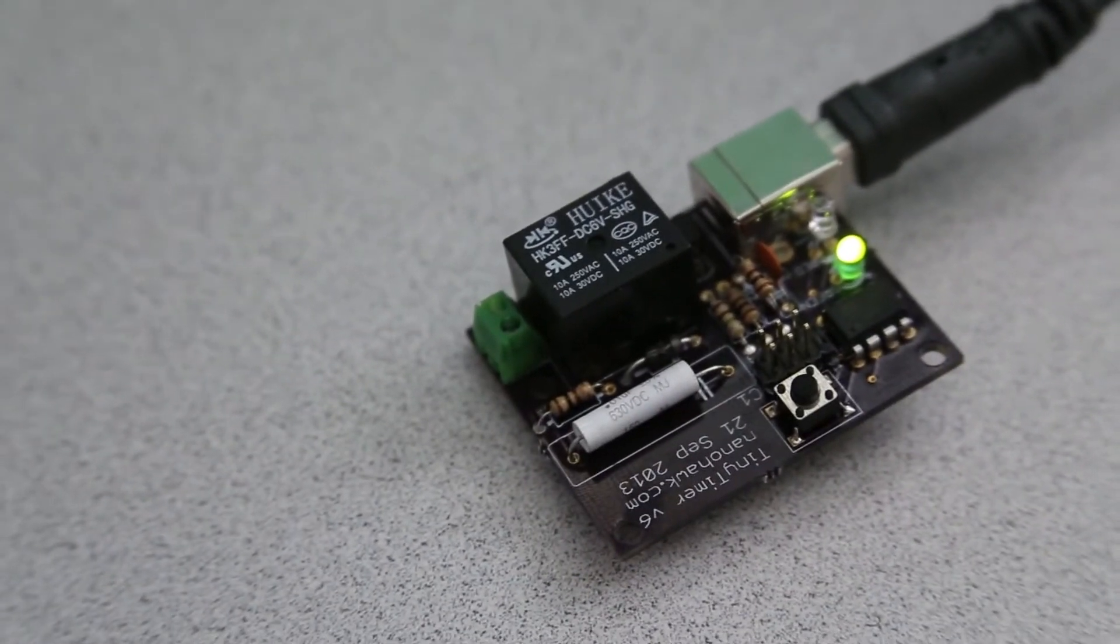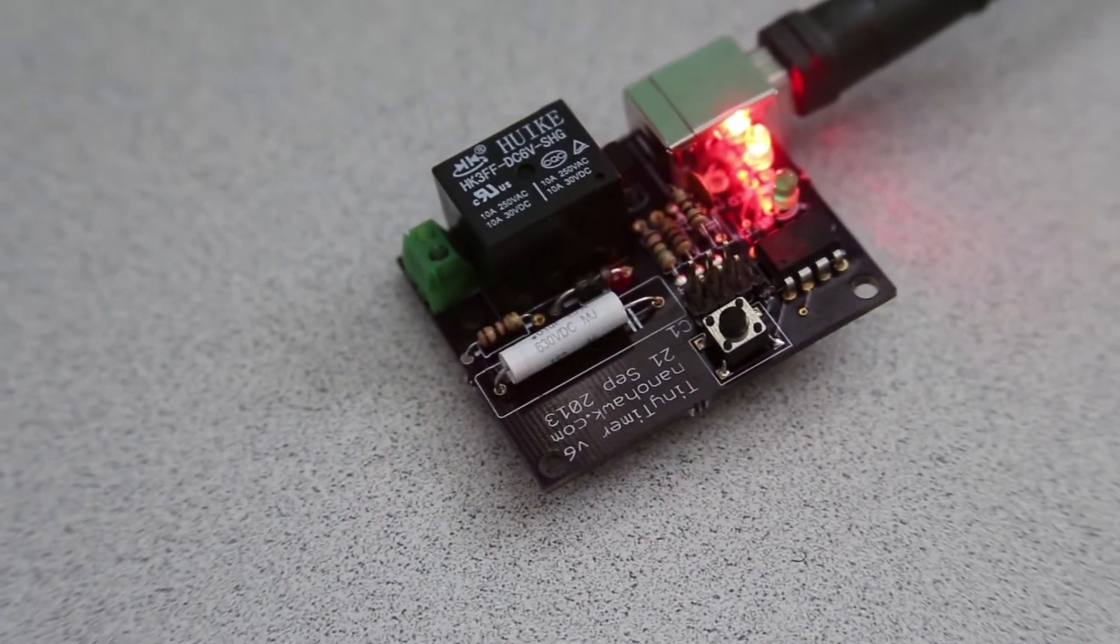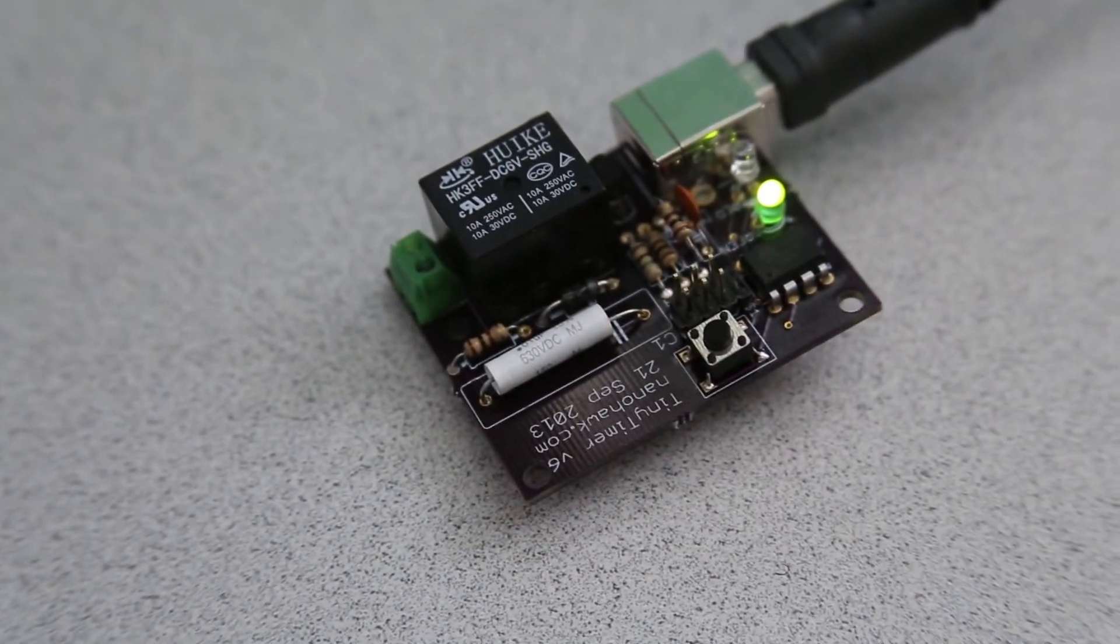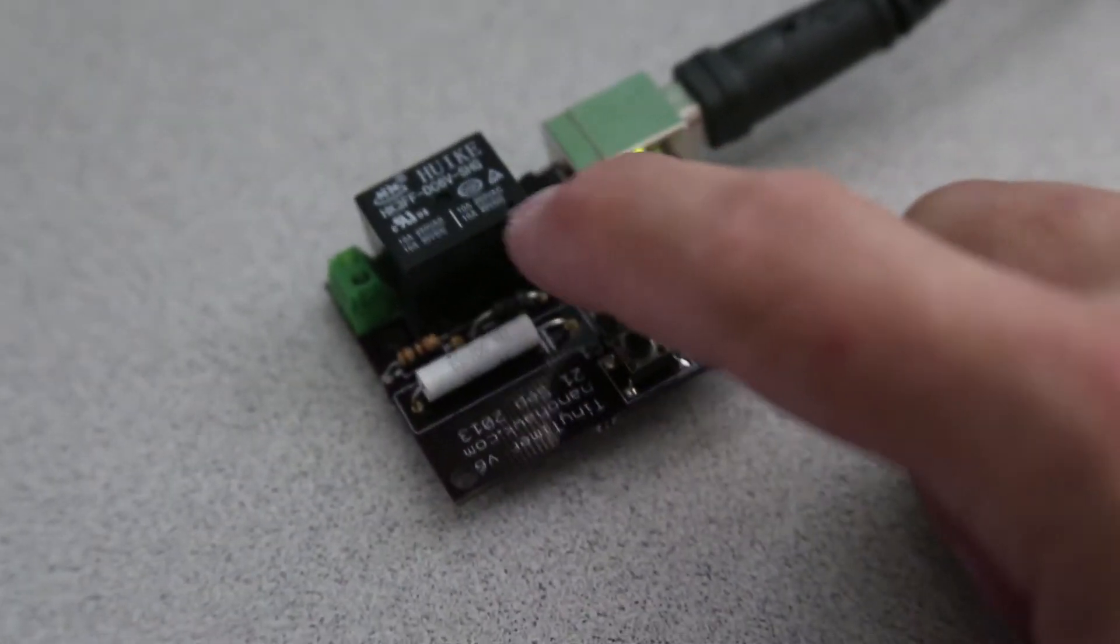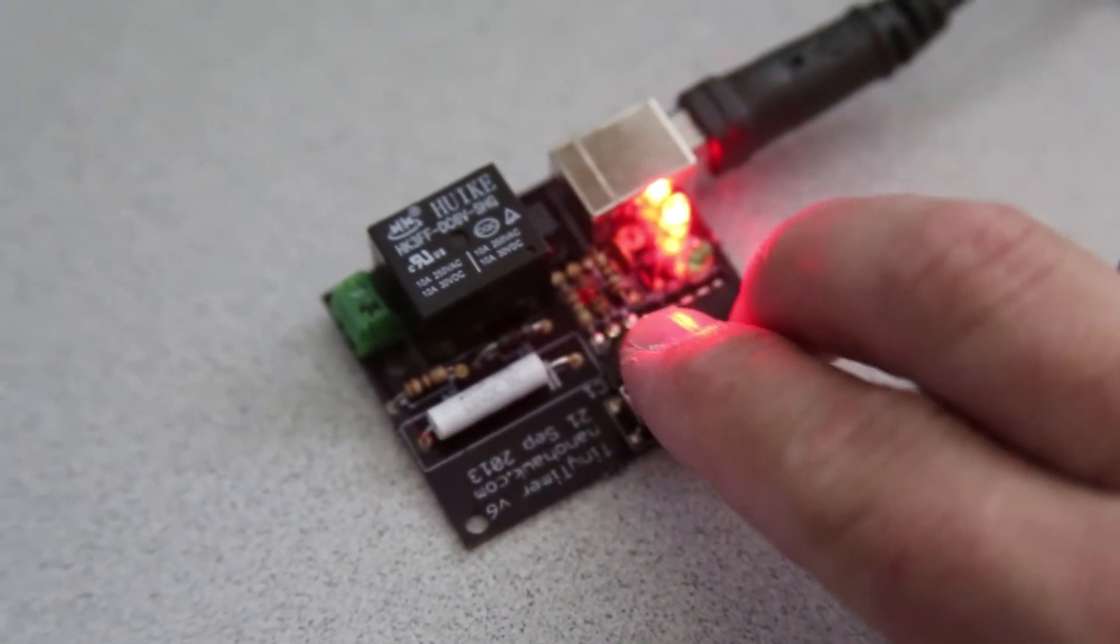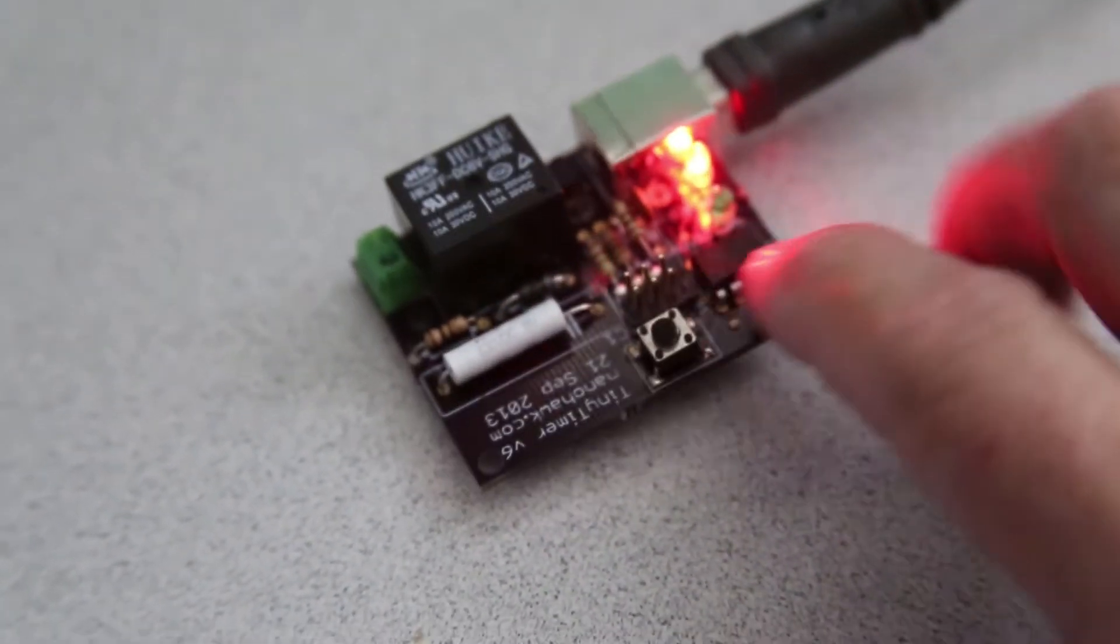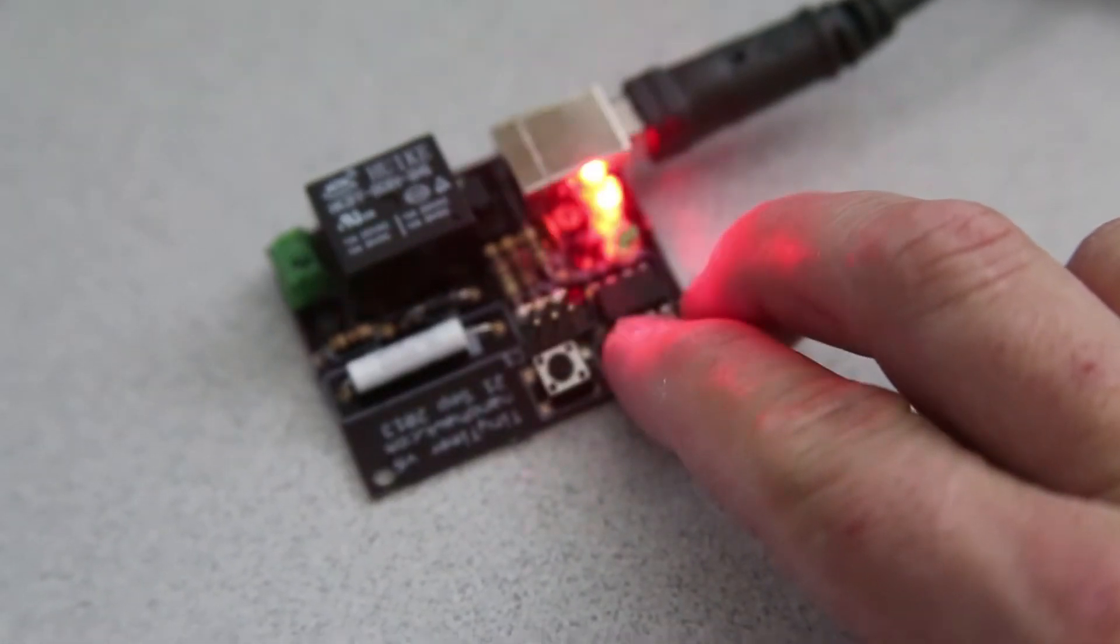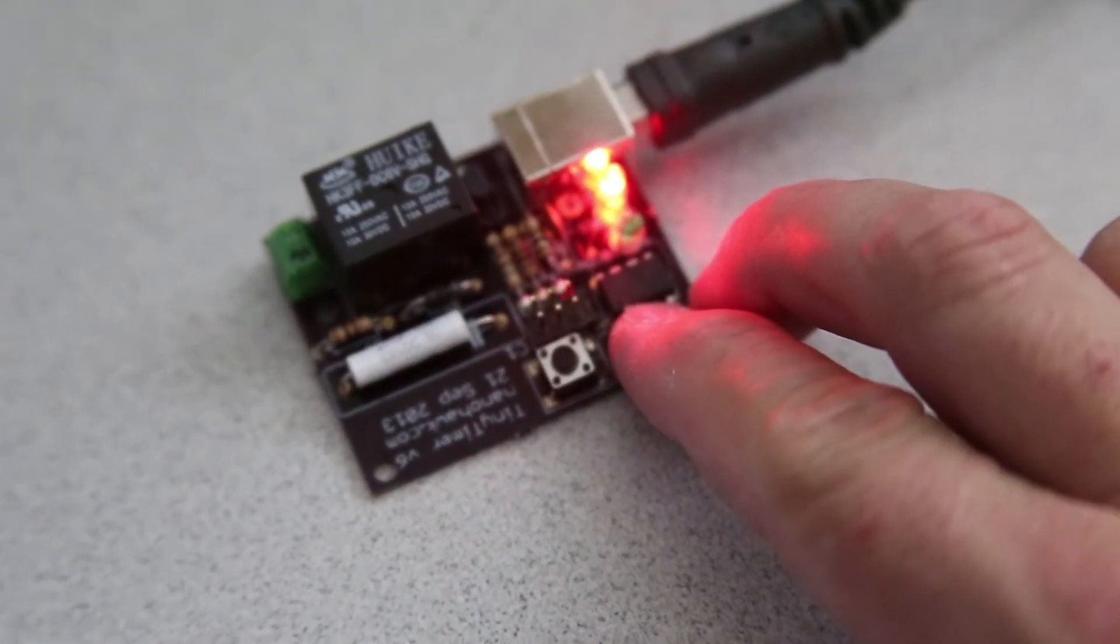If you're running a long cycle you might actually want to reset it, but otherwise it's not something I expect you to use very often. There is a six pin ISP header for programming and customization here, and then there's an ATtiny85-20PU chip right here. That's the microcontroller.